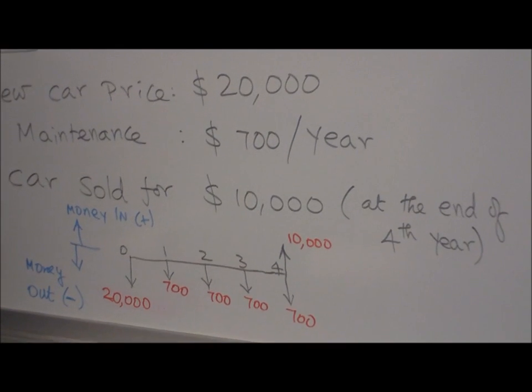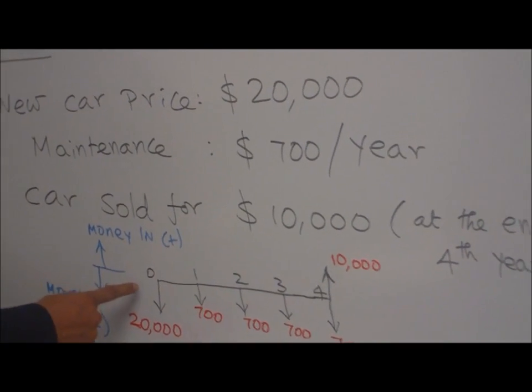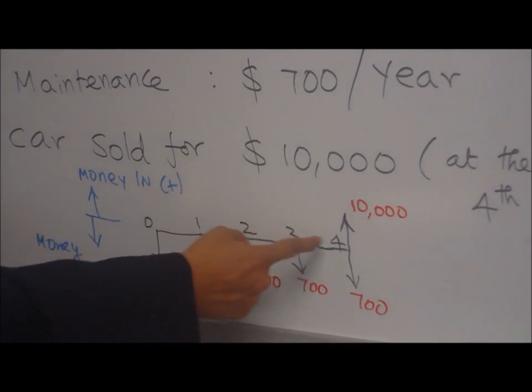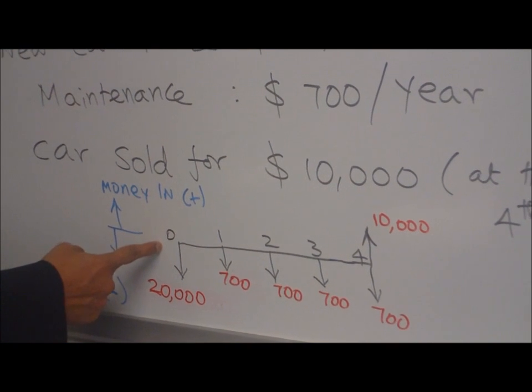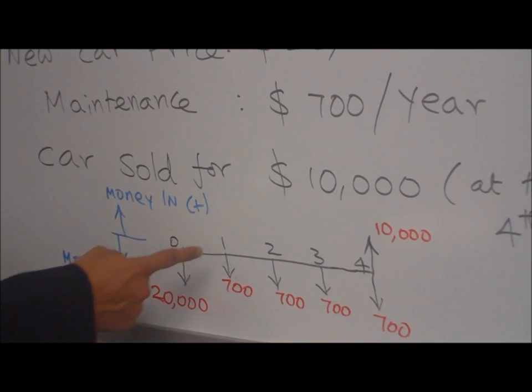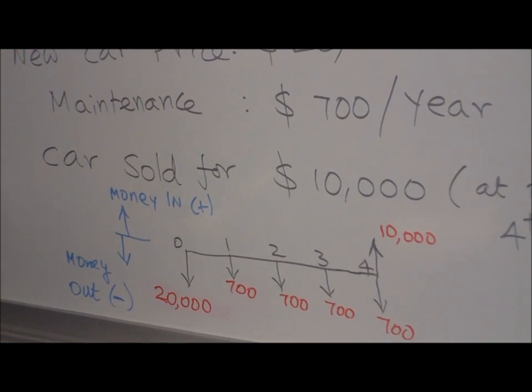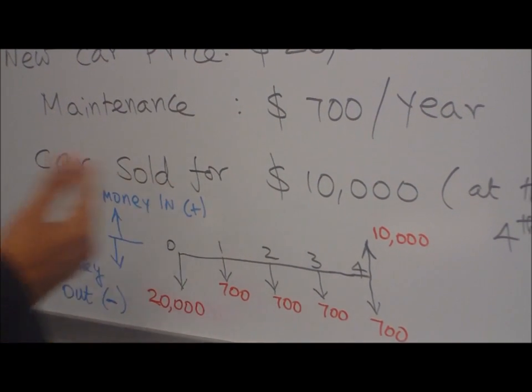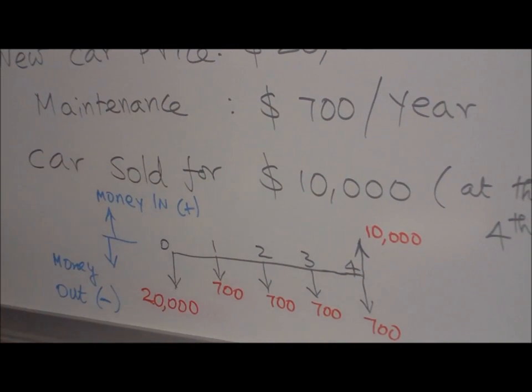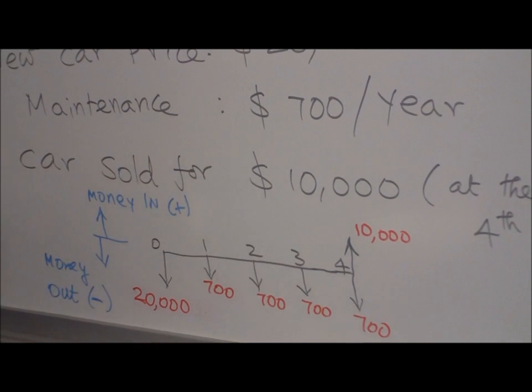I have 0, 1, 2, 3, 4. Zero represents the beginning of the first year. One represents the end of the first year. Similarly, 2 end of the second year. 3 represent the end of the third year. 4 is end of the fourth year.